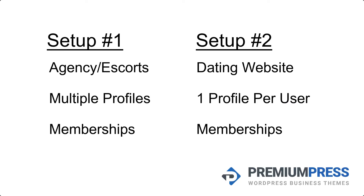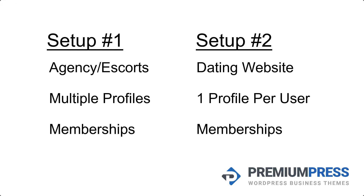Now let's consider adding memberships on top of listing packages. The listing package only allows users to create a single listing or multiple listings depending upon your setup. Now we're going to add memberships on top. A membership in setup one, where you've created an agency or escort website, would refer to the members — users would create a membership so that they could view the escorts' details and profile photos. In setup two, the dating website, you might want memberships as part of the registration so users can create a free profile only after they join via a membership.